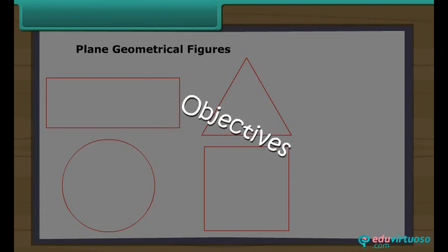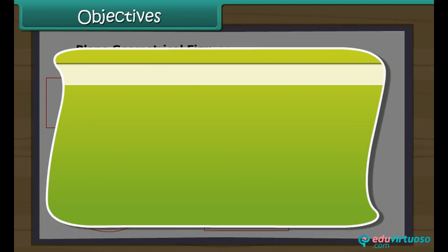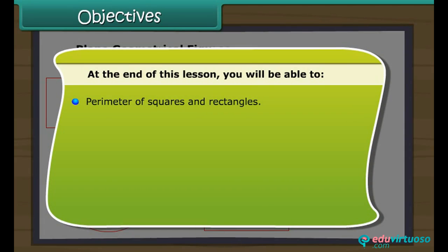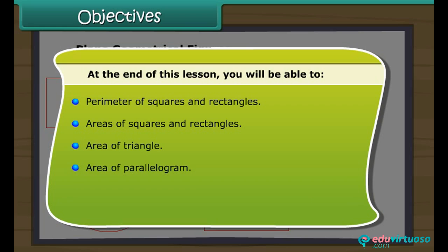Objectives: At the end of this lesson, you'll be able to understand the perimeter of squares and rectangles, areas of squares and rectangles, area of a triangle, area of a parallelogram, circumference and area of a circle, and unit conversions.